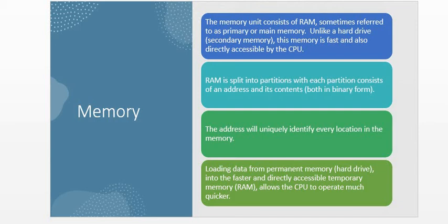RAM is responsible for keeping data temporarily during processing — it is referred to as volatile memory, because it only keeps contents as long as there is power. If you lose power, the contents of RAM are also lost. When we classify computer memory, we classify it as volatile or non-volatile. Volatile memory — RAM — loses contents when power is lost. Non-volatile memory — such as the hard disk drive or USB — is not affected by loss of power.